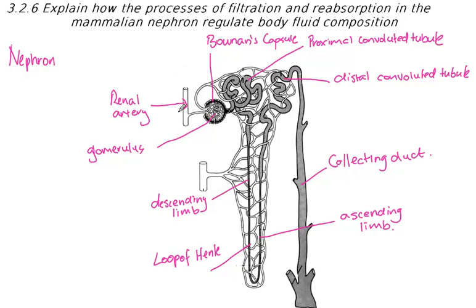Blood is brought in through the renal artery. Filtration occurs across this Bowman's capsule, and anything that's not filtrated travels along through these fine capillaries, where filtration, reabsorption, and secretion occur. Finally, the blood comes out clean in the renal vein.